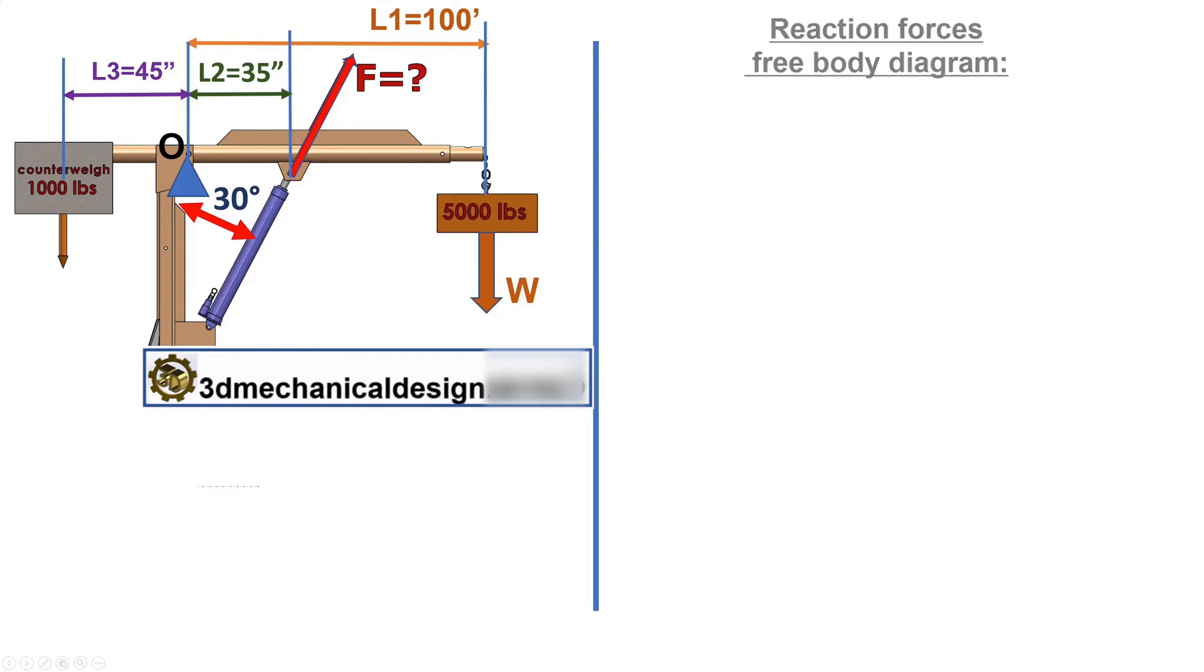Reaction forces free body diagram. O is the pivot point. F is the point where cylinder force is applied.